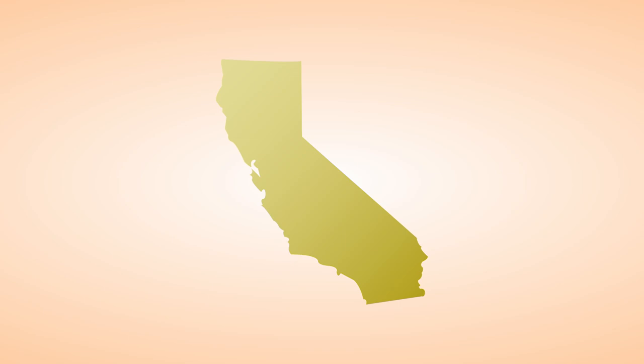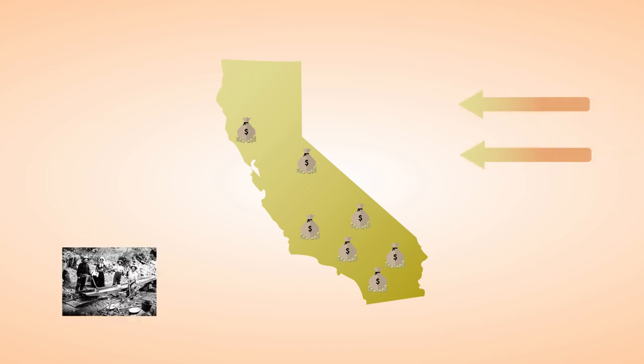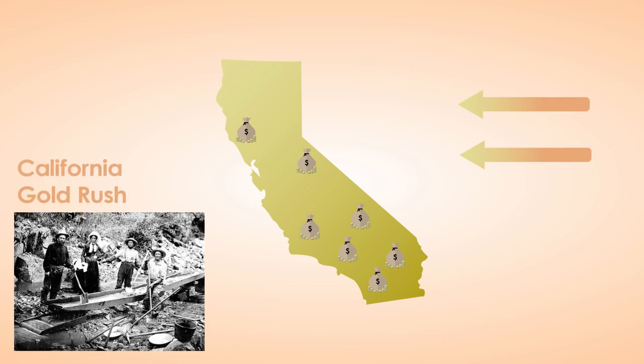Flash forward to 1848, when gold was first found in California. This discovery would eventually lead to the mass migration west known as the Gold Rush.